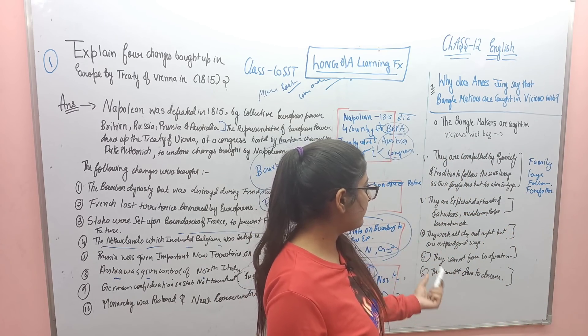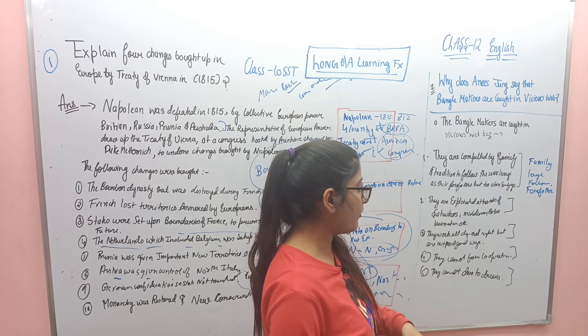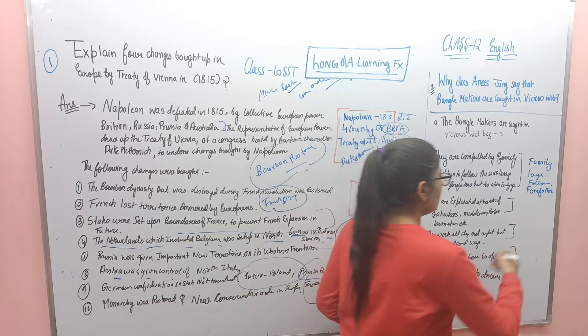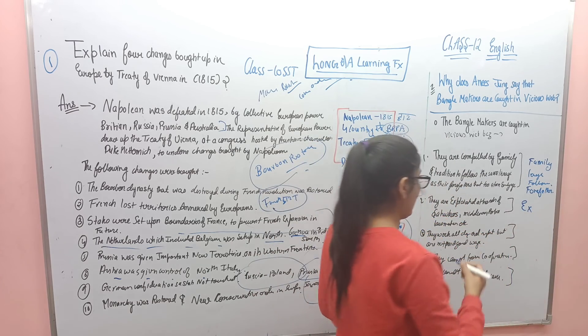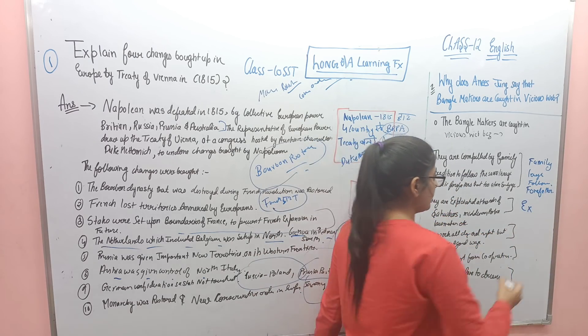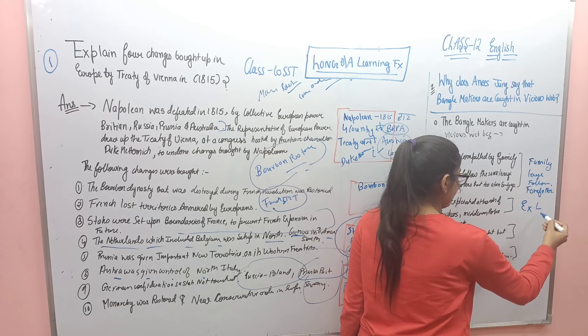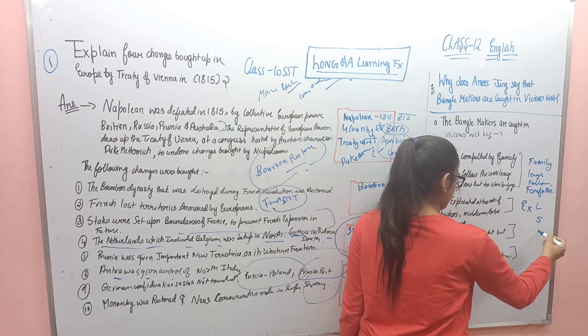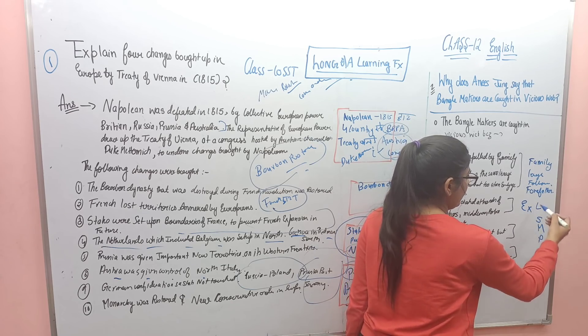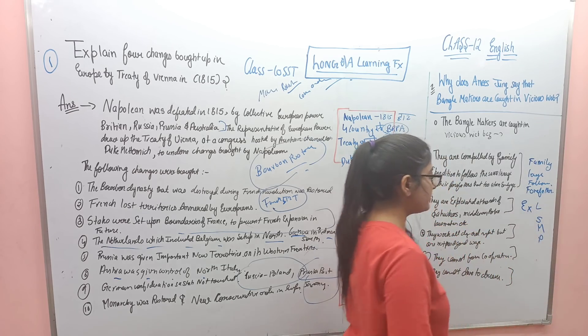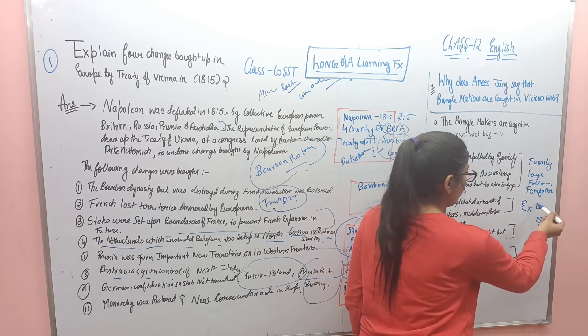They are compelled to follow the family lineage and follow their forefathers. Next: they are exploited at the hands of saokars, middlemen, policemen, and lawmakers. Exploitation by landlords, saokars, middlemen, and policemen — abbreviation: LSMP. Make this keyword: 'Exploited LSMP.'